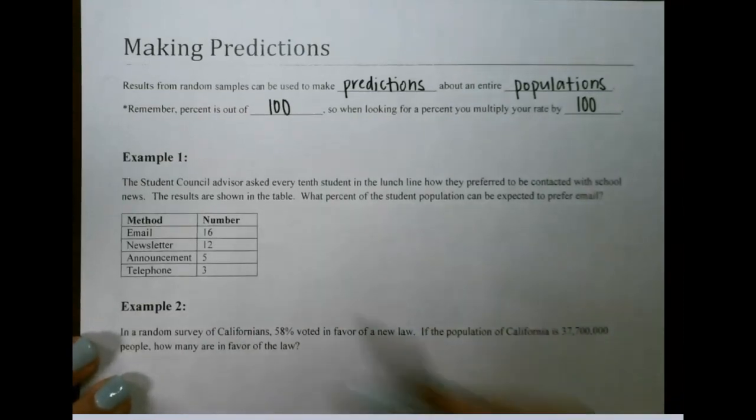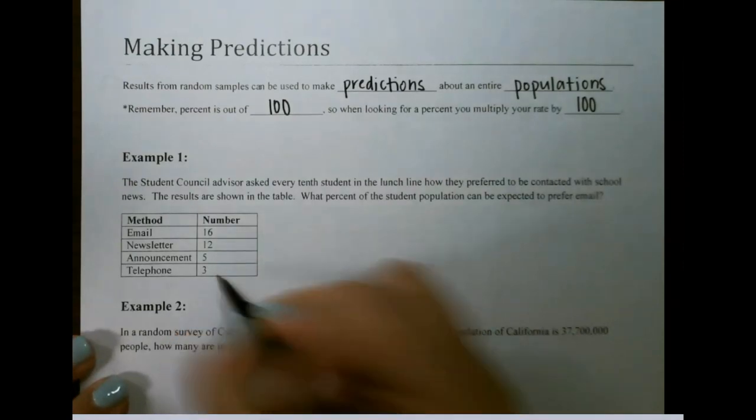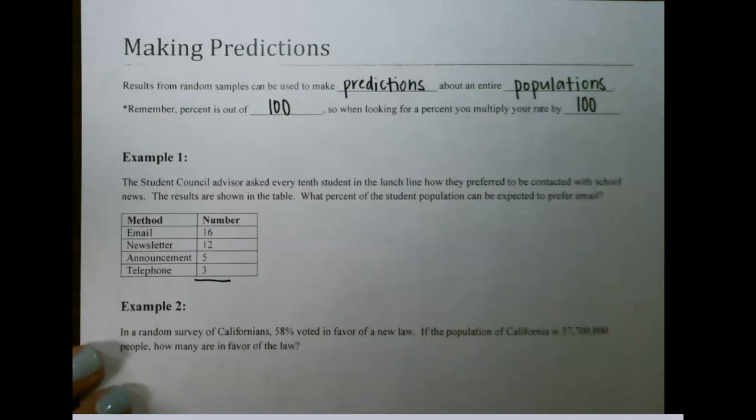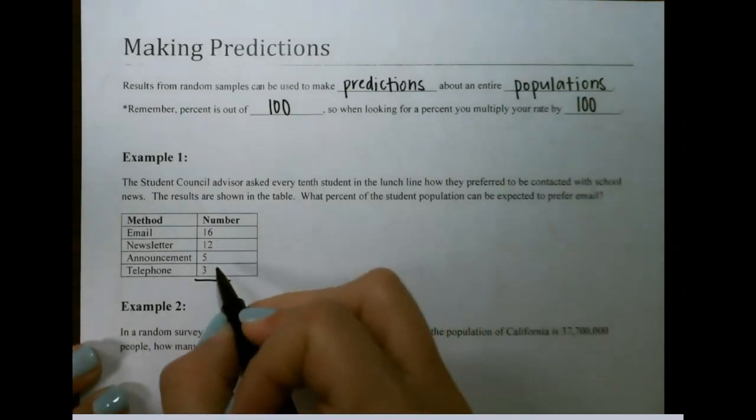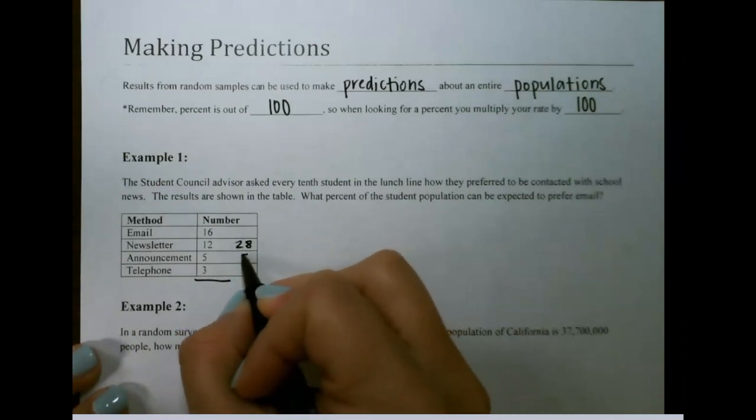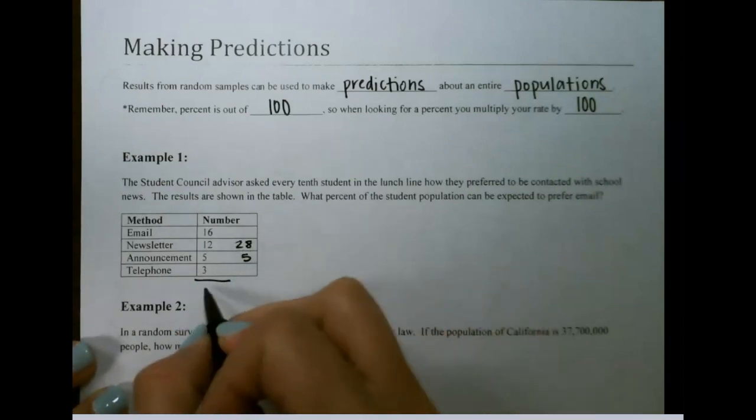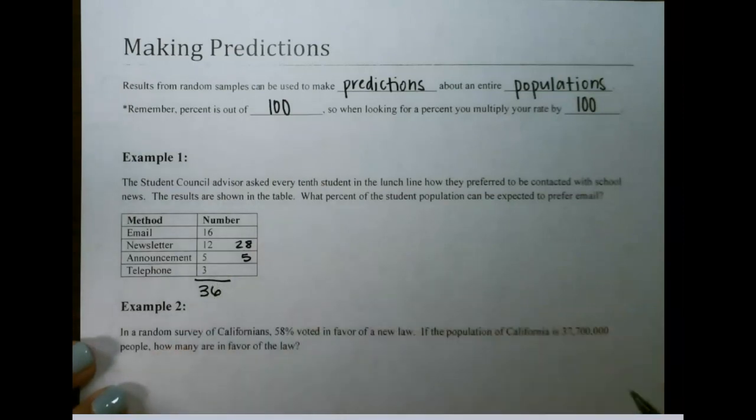There are two ways we could solve this. First, we need to add up to figure out how many total students got surveyed. We have 16 plus 12 is 28, plus 5 is 33, so we have 36 total students.